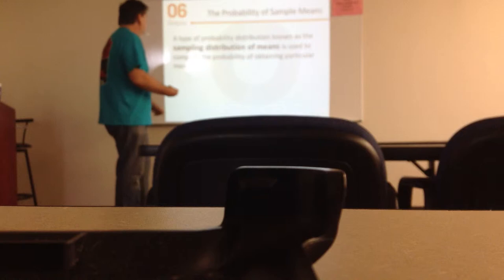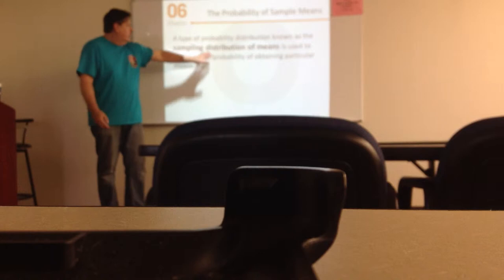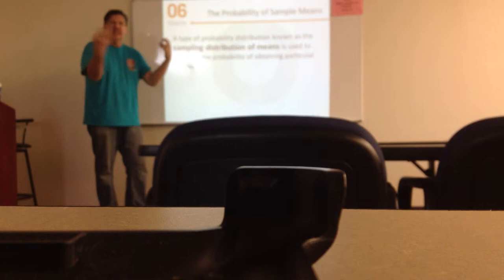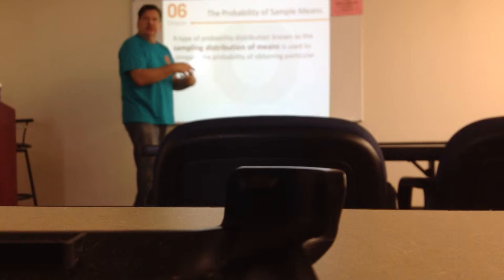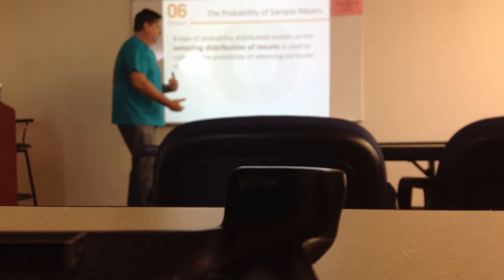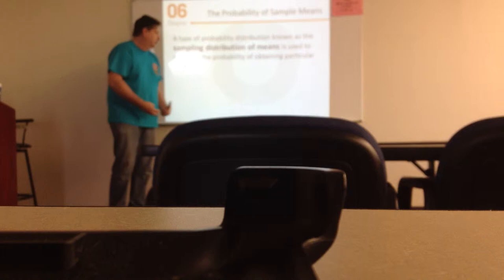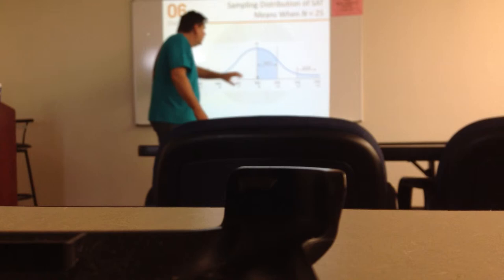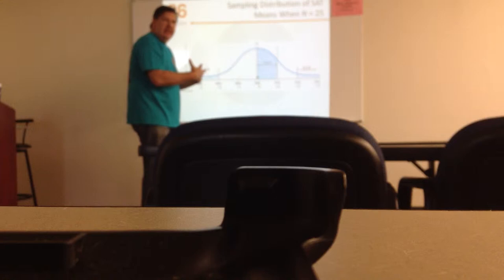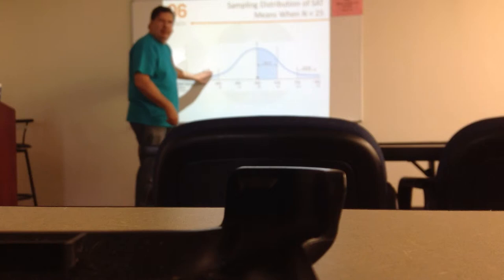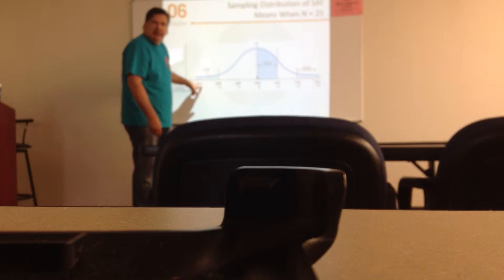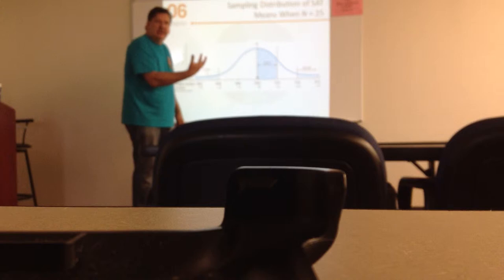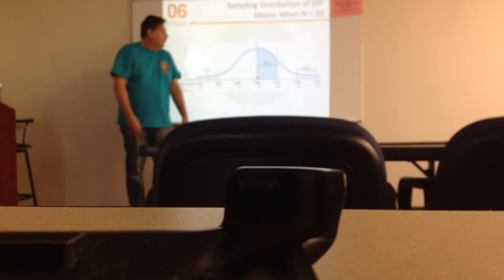A type of probability distribution known as sampling distribution of means is used to compute the probability of obtaining particular means. Basically, if I take a bunch of samples and find the mean of means, I'm going to assume that those means are going to be equally distributed on a normal distribution, and then I can use that standard normal z-distribution. If I'm getting all these different sample means and they fall within the normal distribution, I can assume that I've captured the true population — as long as my sampling techniques were actually catching the true population and not some other population.